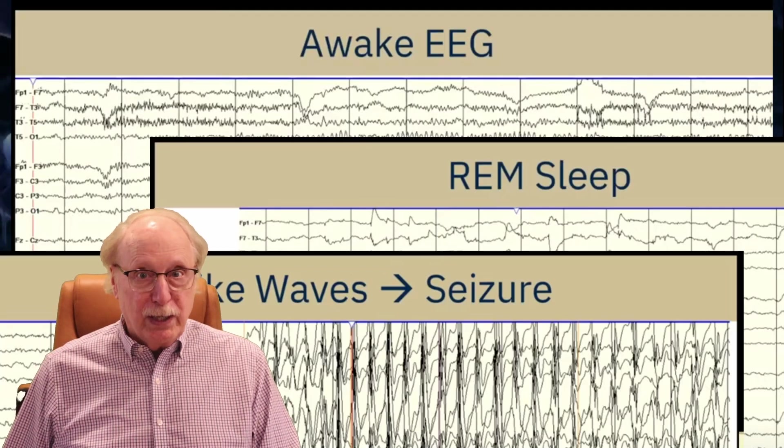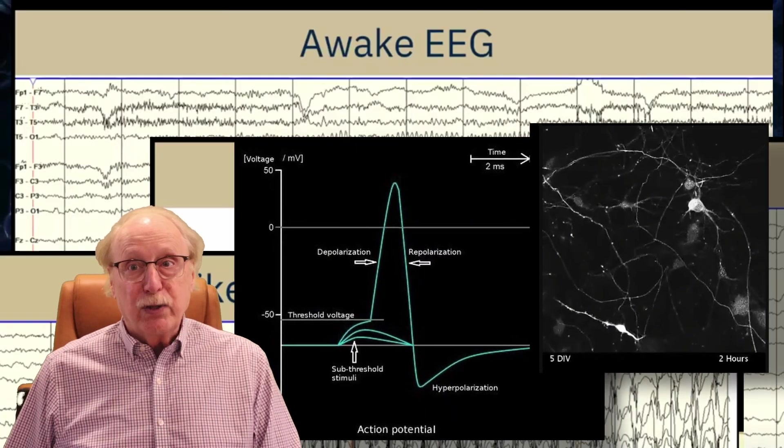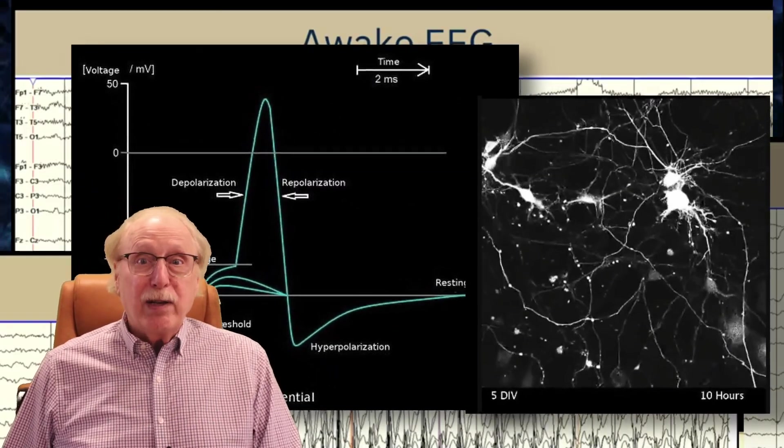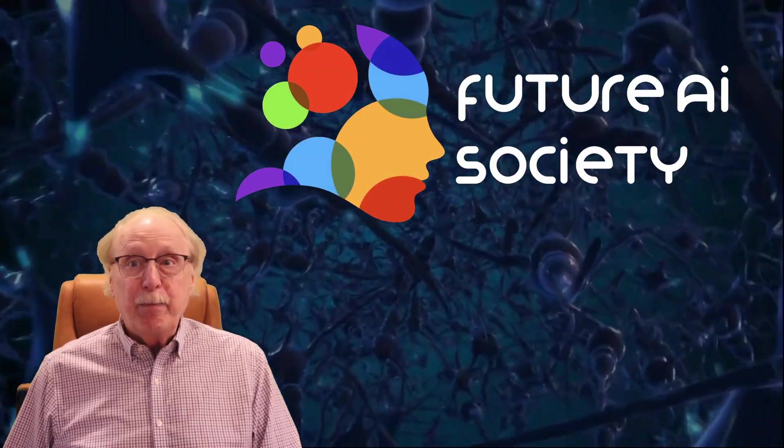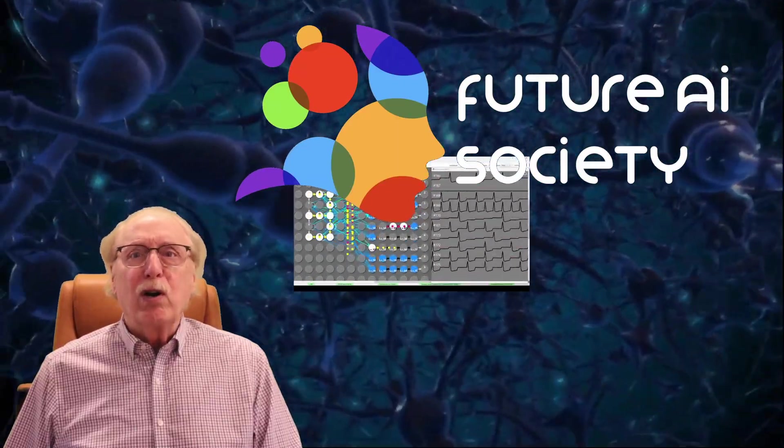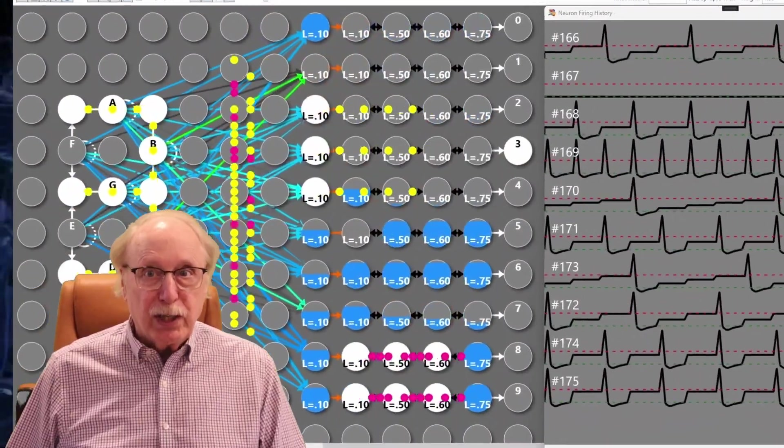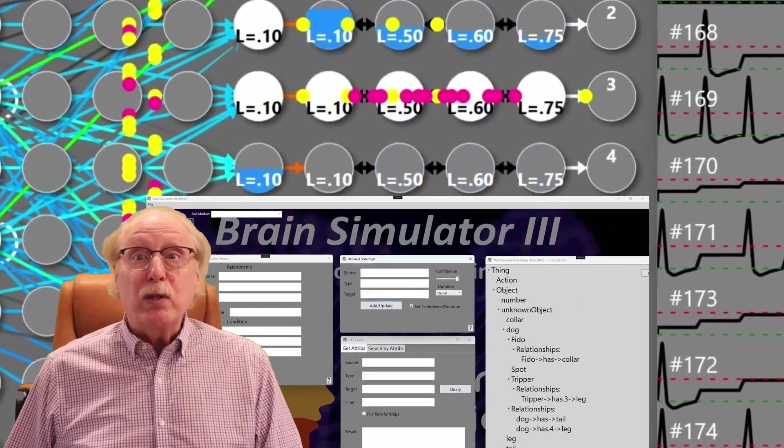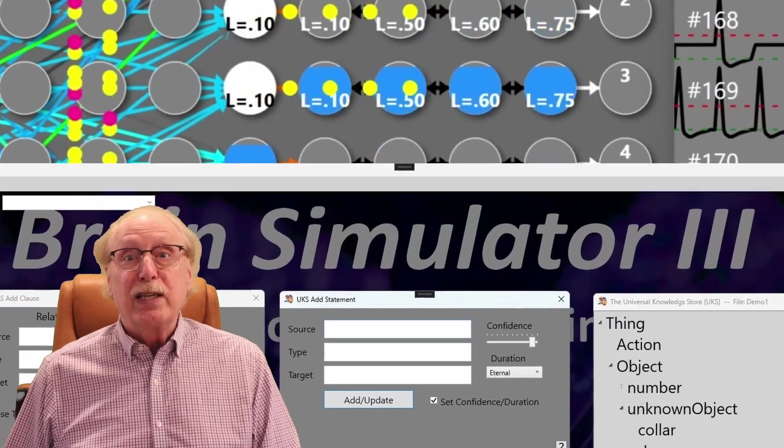Beyond AI, I've developed software for neurological test instruments and neural simulators. I created the Future AI Society to explore how neuroscience can inform smarter, more human-like AI. A lot of effort has gone into our open-source brain simulator projects, which I'll be using throughout this series for simulations and demonstrations.